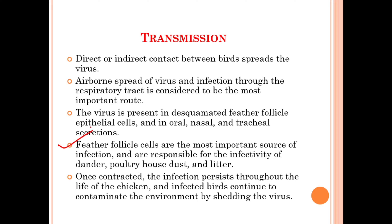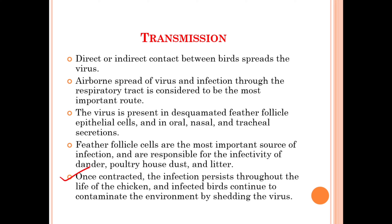The feather follicle cells are the most important source of infection and are responsible for the infectivity of the poultry house dust and litter. Once contracted, the infection persists throughout the life of the chicken, and the infected bird continues to contaminate the environment by shedding the virus into the environment.